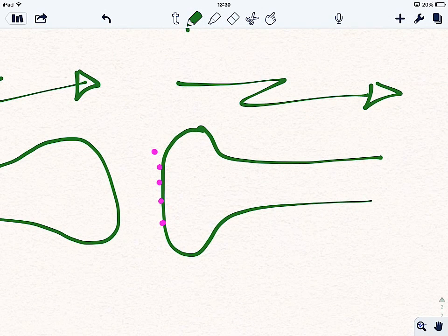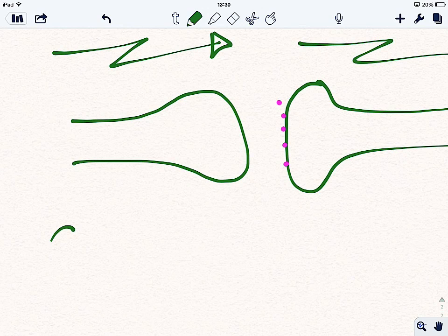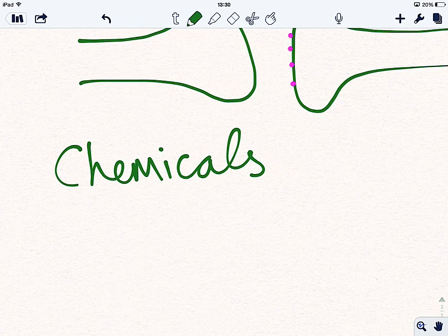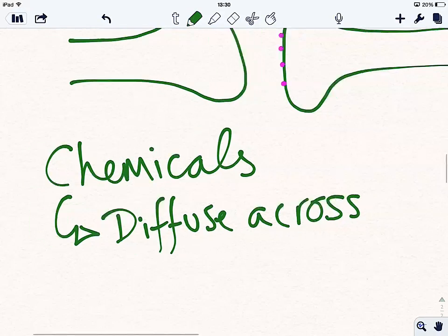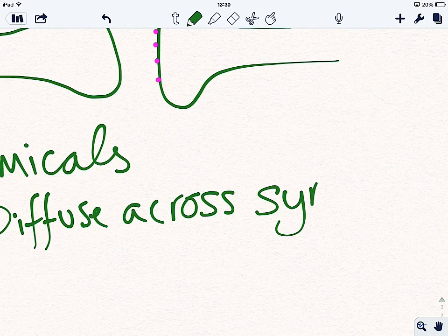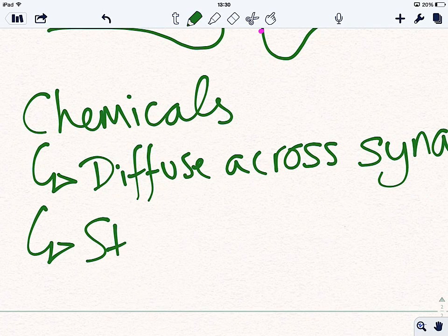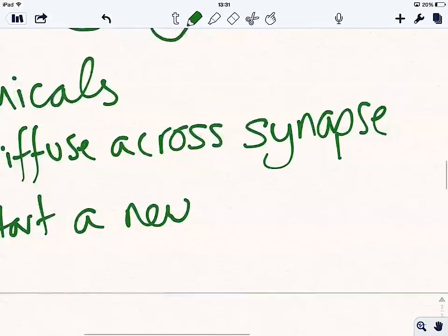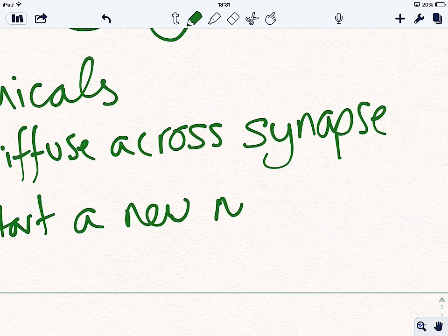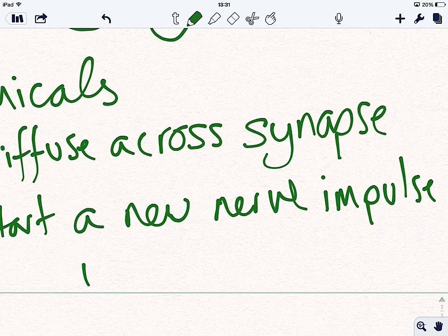And that's called synaptic transmission. So it involves chemicals, which move across, or diffuse, across the synapse. And they start a new nerve impulse in the second neuron. In the second neuron.